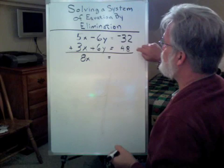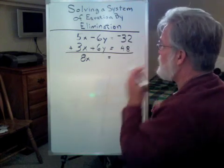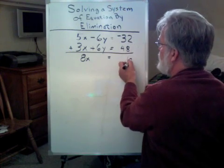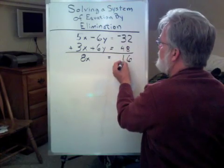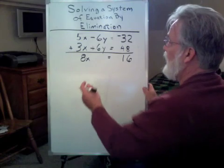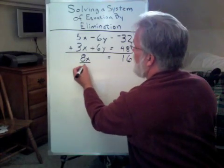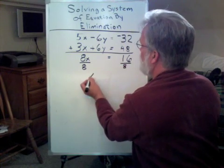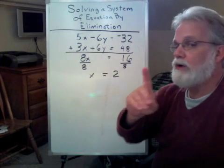And now we're going to add these two. That's 48 plus negative 32, which is a subtraction. So, 8 take away 2 is 6, 4 take away 3 is 1. I have 8x equals 16. Well, now I have an equation I can solve. I divide both sides by 8, and my result is x equals 2. Very good. We're not done. We still have to find y.